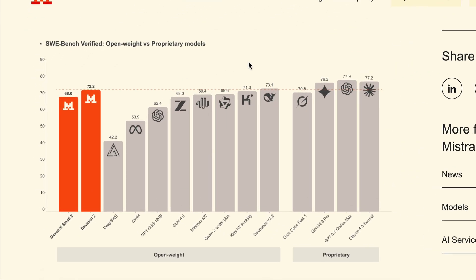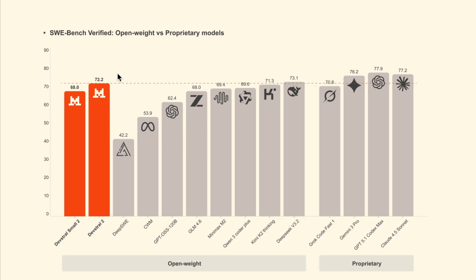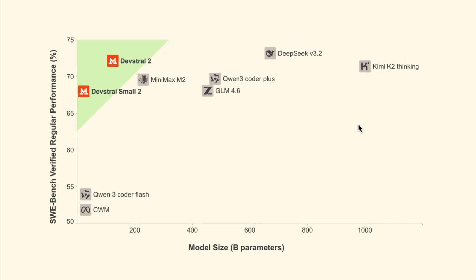Let's quickly look at the benchmarks. We can see that even with far fewer parameters than its biggest competitors, DevStral 2 still scores 72.2% on the SWE Bench Verified test. It is reported to be more cost-efficient than the Claude Sonnet model on real-world tasks, and outperforms models like GLM 4.6, Minimax, Qwen 3, and Kimi K2. It trails only about 1% behind DeepSeek V3. The performance is pretty close to proprietary giants like Google and Anthropic, while remaining open-weights. Both models are significantly smaller in size than their rivals.